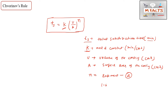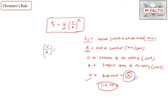n is a constant or exponent with an approximate value of 2, sometimes ranging from 1.5 to 2. If the question does not give the value of n, you may assume n equals 2. Also, whenever they ask you to calculate the modulus of casting, that equals V divided by A — the volume-to-surface-area ratio is known as the modulus of casting.